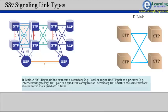Secondary STPs within the same network are connected via a quad of D links. The distinction between a B link and a D link is rather arbitrary. For this reason, such links may be referred to as BD links.